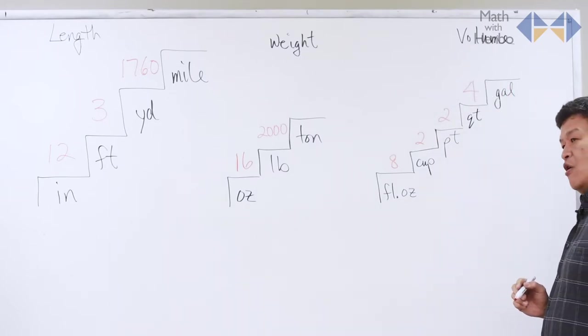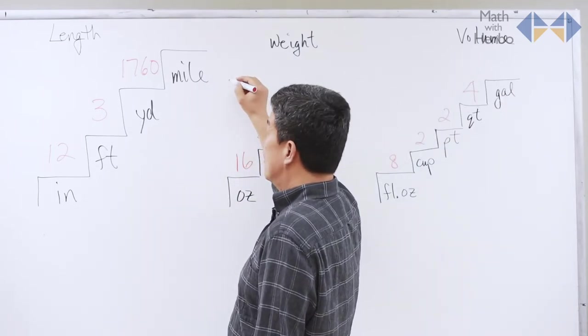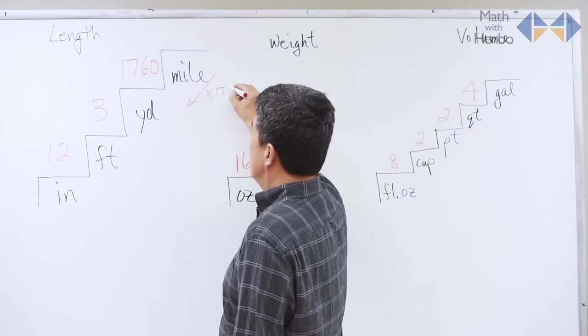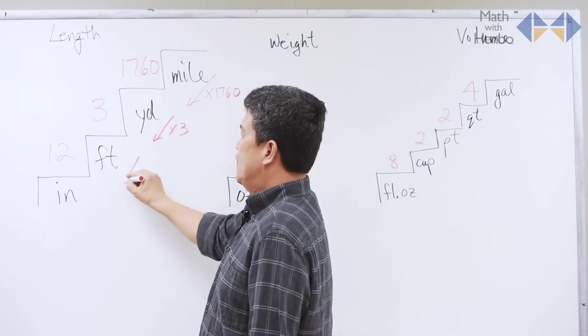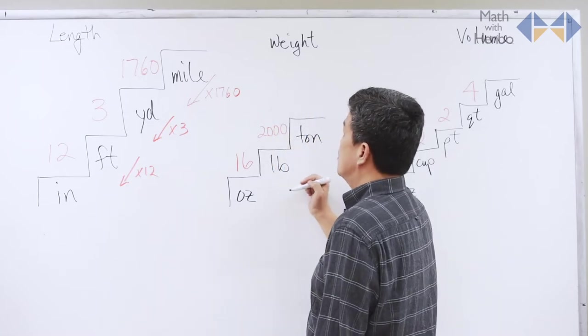For the conversion, all you have to do is when you're stepping down, multiply by the number in front of each step. Here, mile to yard is times it by 1,760. Yard to feet, multiply by 3. Feet to inches, multiply by 12. Same applies when it comes to the weight.